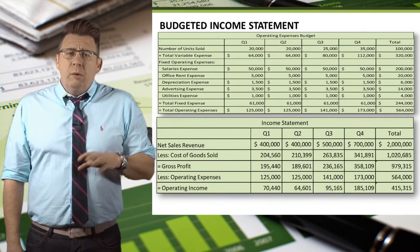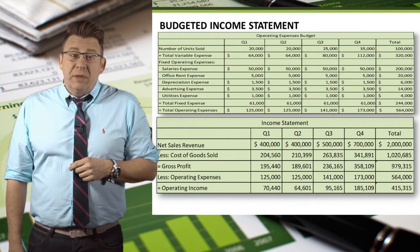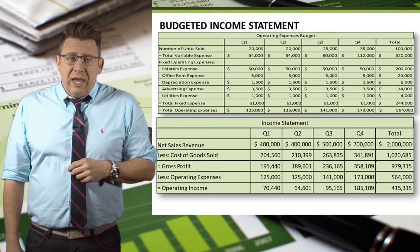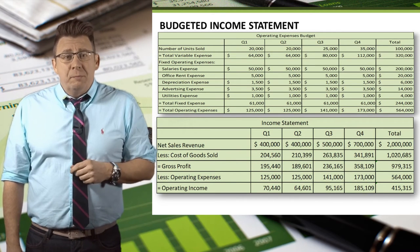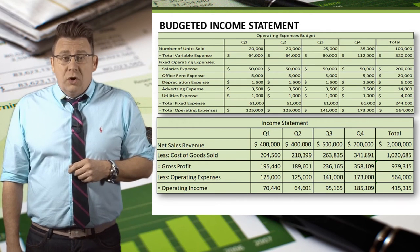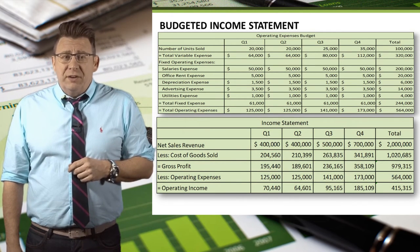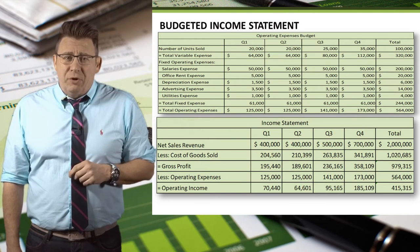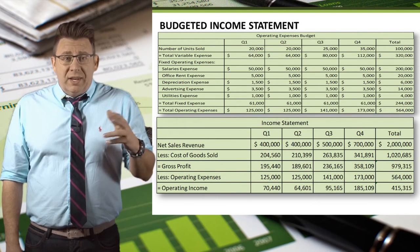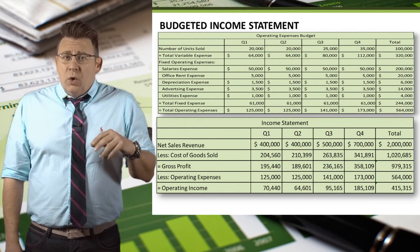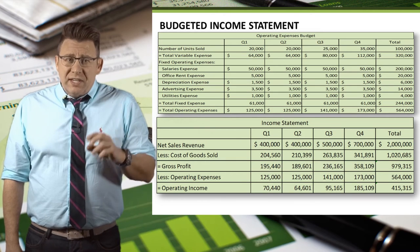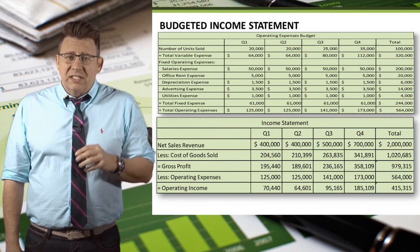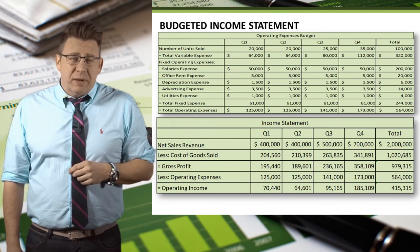Then we will pull Operating Expenses from the Operating Expenses Budget and subtract the amount from the Budgeted Gross Profit to arrive at Budgeted Operating Income. In Excel, we would link the cells in the Income Statement to the related cells in the Operating Expenses Budget.